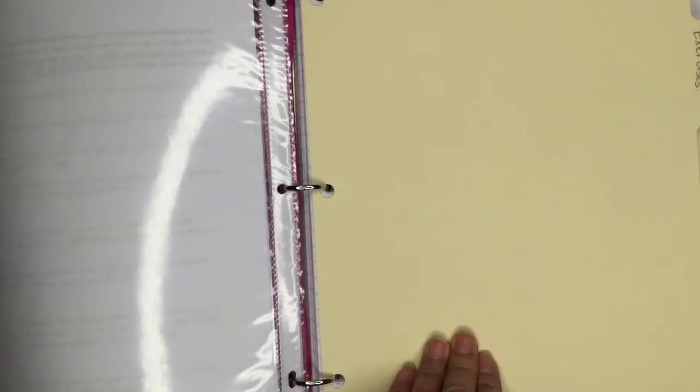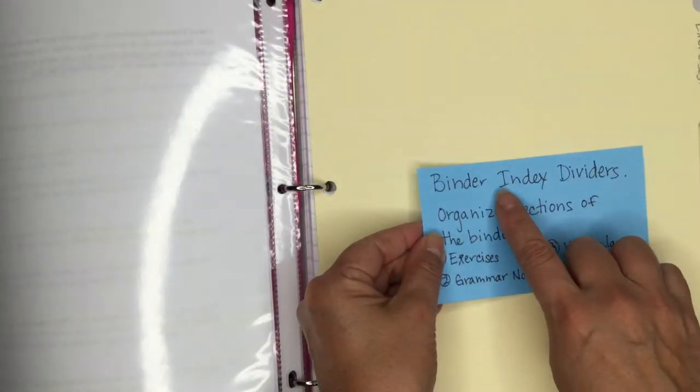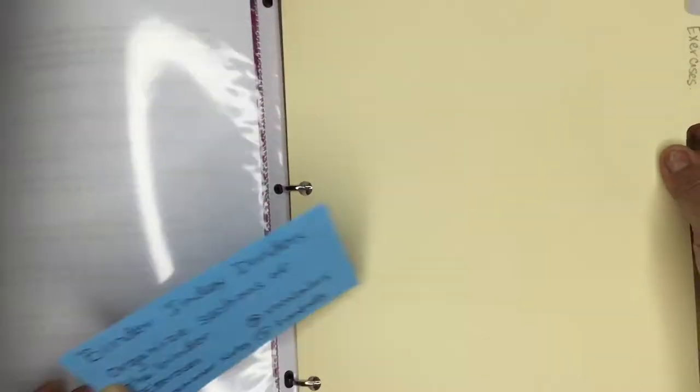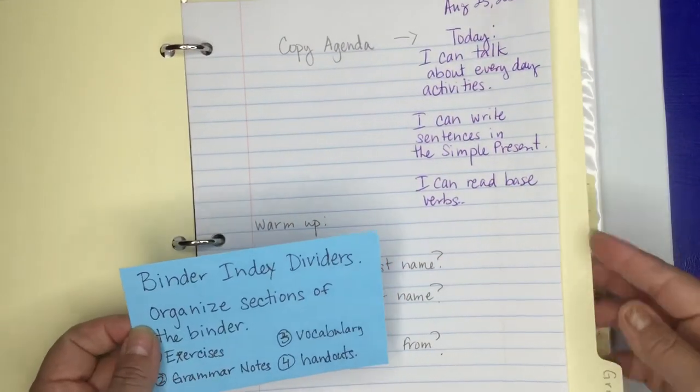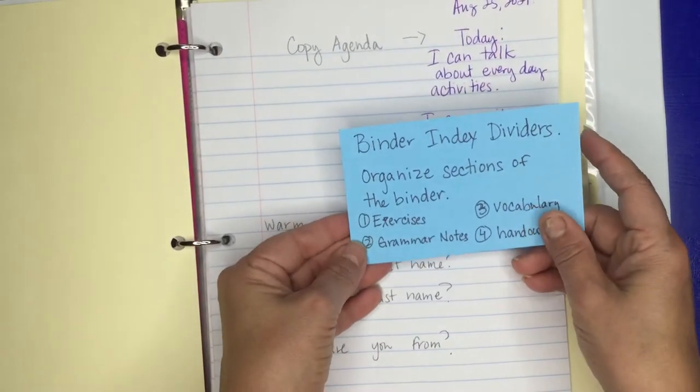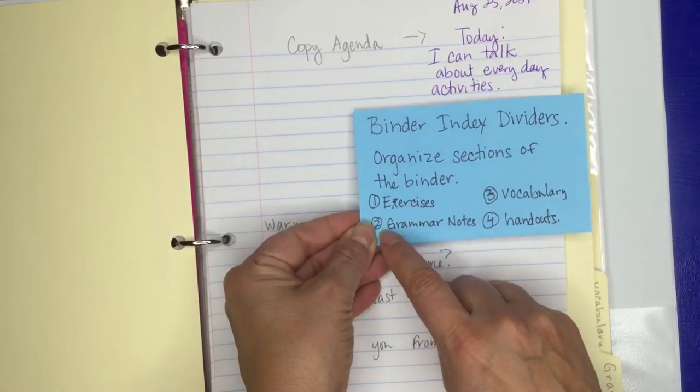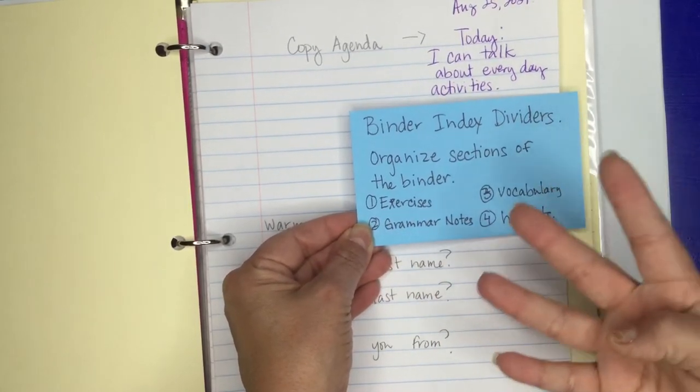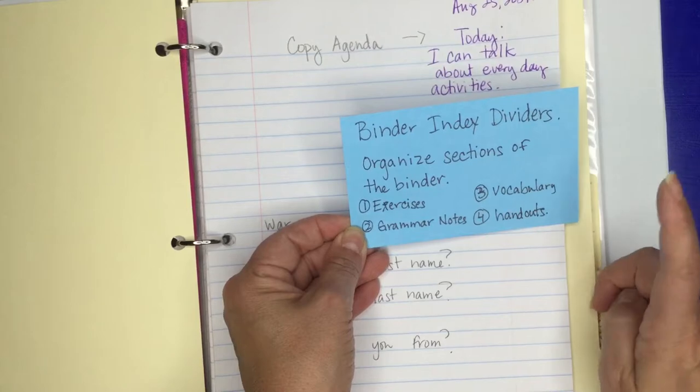Then you will need the binder index dividers, and that's these. And for this binder I have one, two, three, four sections, so you need four of them.